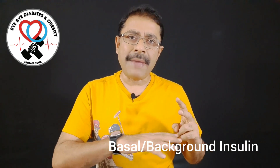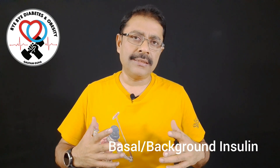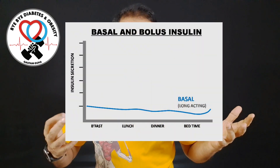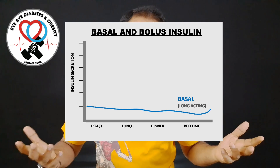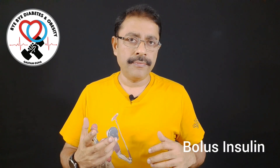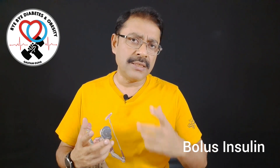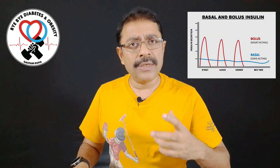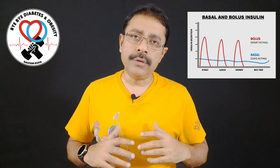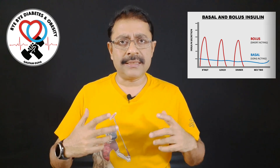Broadly we can classify insulin into two types. The basal or the background insulin, which is released by the pancreas throughout the day — when you are not eating, when you are sleeping, when you are resting. And then there is something called the bolus insulin, which is what we are going to talk about during the course of our discussions. Bolus insulin is the insulin that is released by the pancreas when we have food, plain and simple.